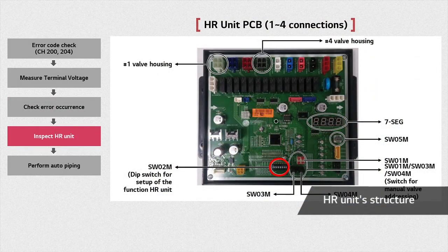Inspect the HR unit. The structure of the HR unit's PCB is shown. First, check the DIP switch in the PCB. As shown in the picture, the number of indoor units can be set by using the HR unit's SW02M DIP switch, specifically switch number 2 and 3.